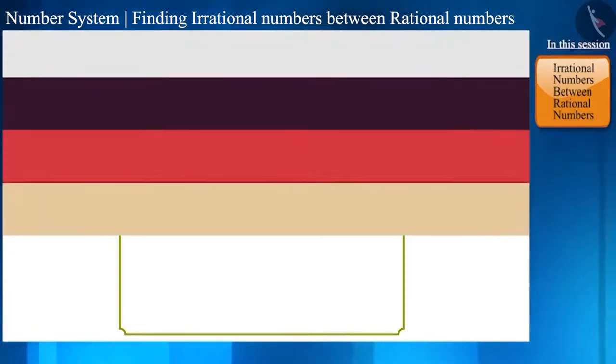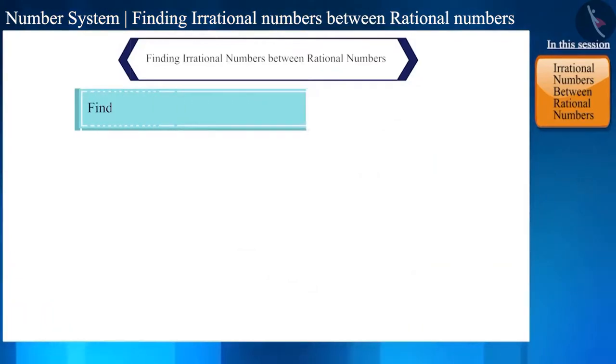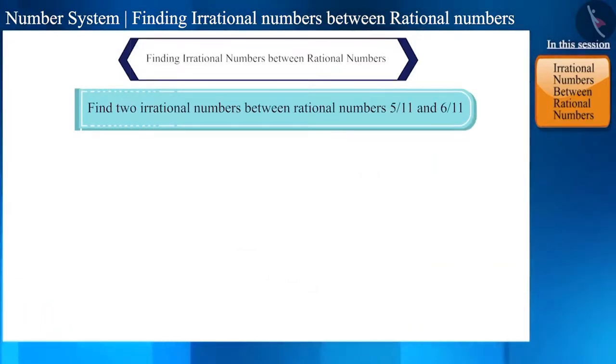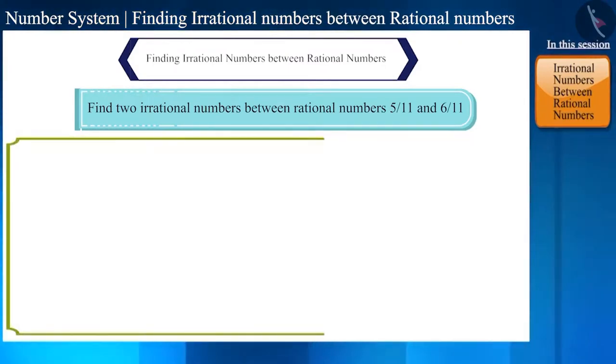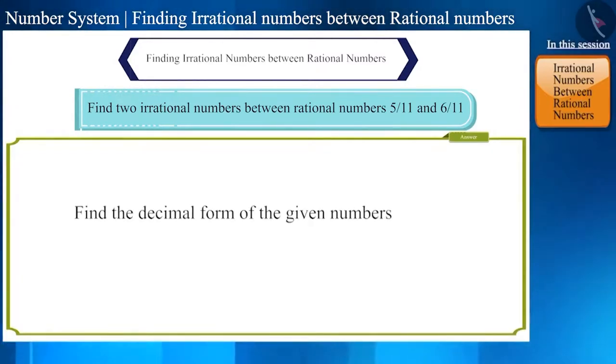Let us take another example. Find two irrational numbers between rational numbers 5 by 11 and 6 by 11. How will you answer this question? Here, first we will find the decimal forms of these rational numbers and then, keeping them in mind, we will write two irrational numbers.